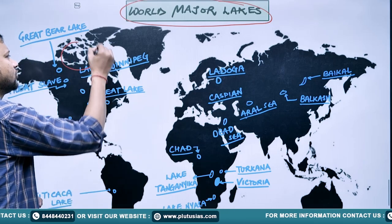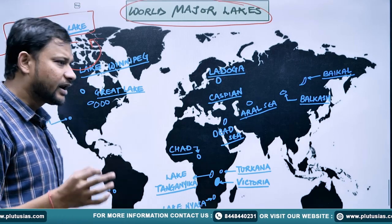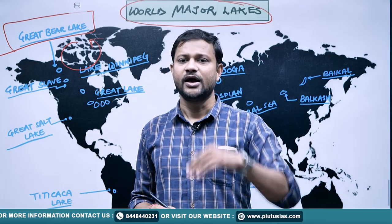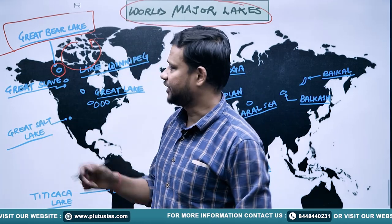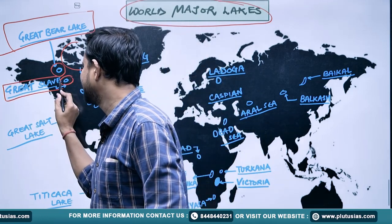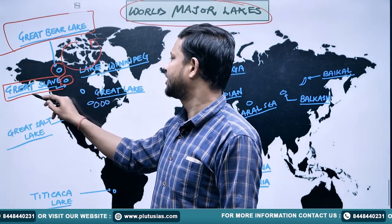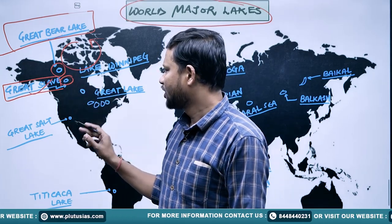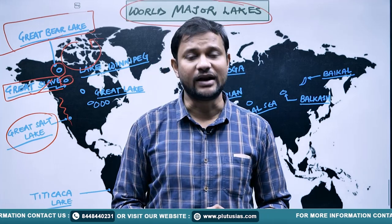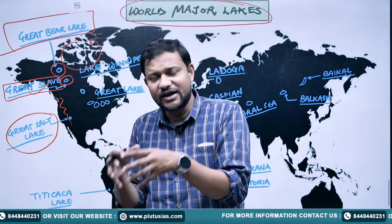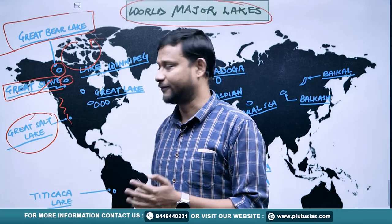Starting from North America in an anti-clockwise direction: first is Great Bear Lake, a frozen lake found in the temperate region of Canada, in the northwestern part. Next is Great Slave Lake, also in Canada. Then, in the margins of the Rockies in a dry desert region, you will find the Great Salt Lake. So: Great Bear Lake, Great Slave Lake, Great Salt Lake.